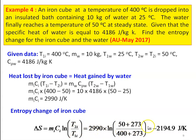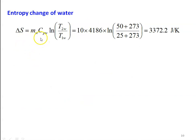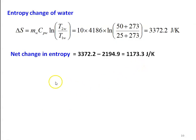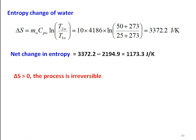The entropy change of water: ΔSw = mw·cpw·ln(T2w/T1w) = 10 × 4186 × ln((50+273)/(25+273)) = 3372.2 J/K. Net entropy change = 3372.2 − 2194.9 = 1173.3 J/K. Since ΔS > 0, the process is irreversible.